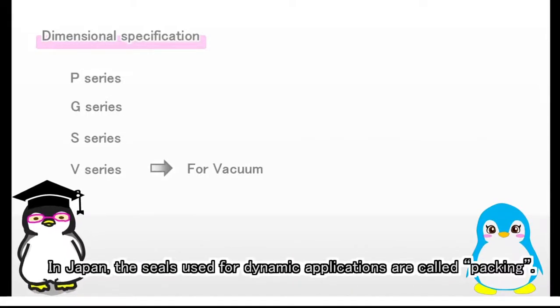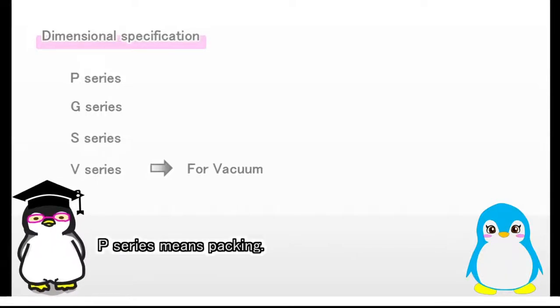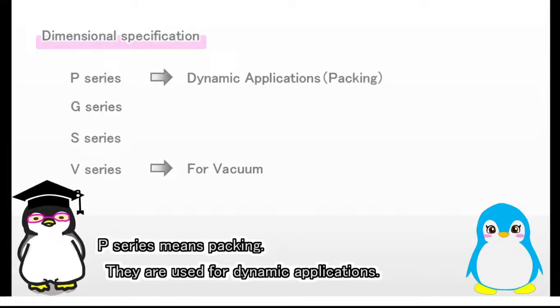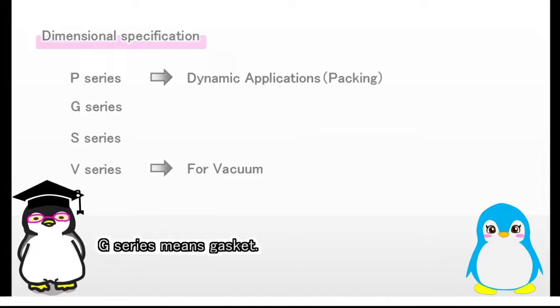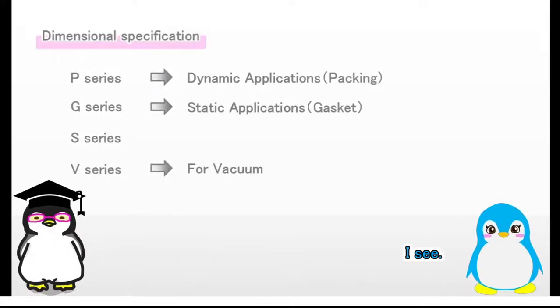In Japan, the seals used for dynamic applications are called packing, while the seals used for static applications are called gasket. P-series means packing. They are used for dynamic applications. G-series means gasket. They are used for static applications. I see.